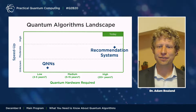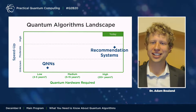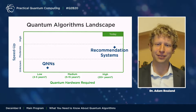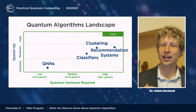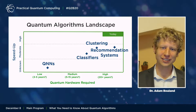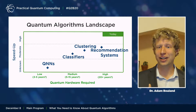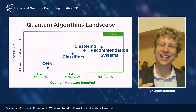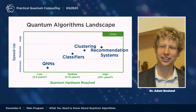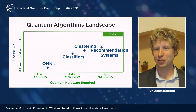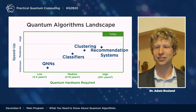A lot happened in the intervening five years in the machine learning landscape. Hardware improved, so everything shifted left. But a classical algorithm by Tang showed that recommendation systems actually only provide a polynomial speedup instead of an exponential speedup. At the same time, there was a proliferation of quantum linear algebra-based QML algorithms such as clustering and classifiers. Currently, people are trying to take these algorithms and decrease their hardware requirements by removing the assumption that you need QRAM, hoping to still achieve a polynomial speedup without it.